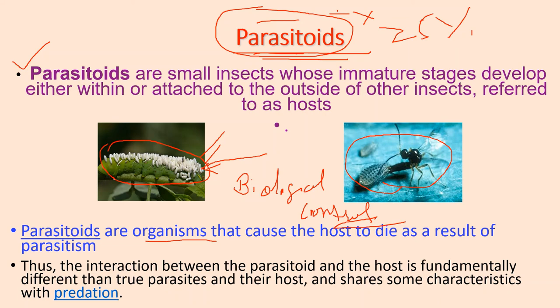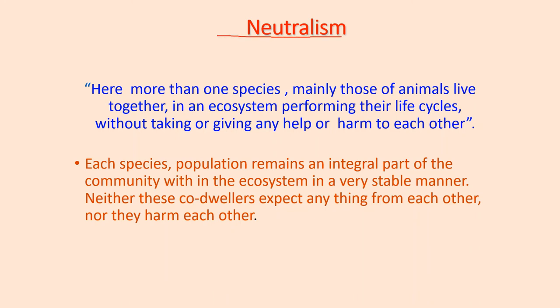The last type of interaction is neutralism. Here, more than one species — mainly animals — live together in an ecosystem, performing their life cycles without taking or giving any help or harm to each other. In neutralism, each species' population remains an integral part of the community within the ecosystem in a very stable manner. Neither do these co-dwellers expect anything from each other, nor do they harm each other. This is all about population interactions; in the next session, we will discuss how different questions may arise from this chapter. Thank you. Goodbye.